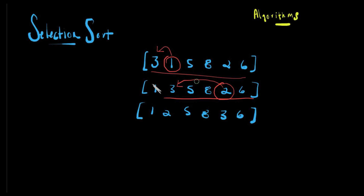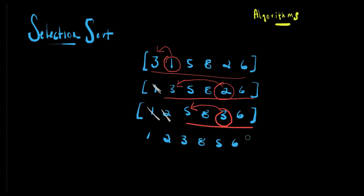We're going to cross out the first two now since those are considered sorted. We do the same thing again — another linear search to locate the smallest number, which is three — and then take that smallest number and swap it. The outcome will be one, two, three, eight, five, six, and then we cross out the first three. Those three are considered sorted: one, two, and three. We keep doing this until everything is sorted.